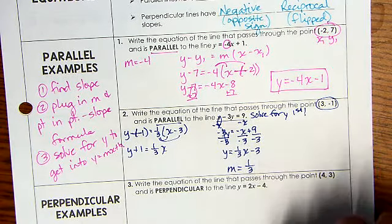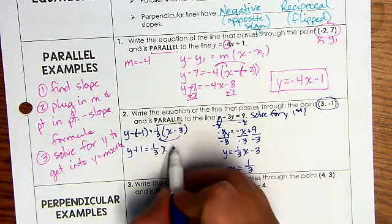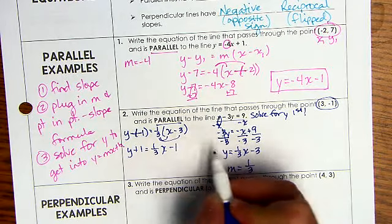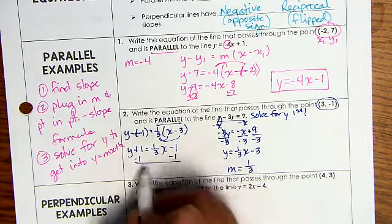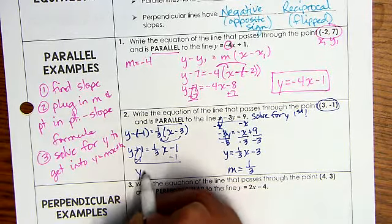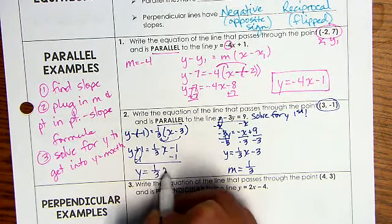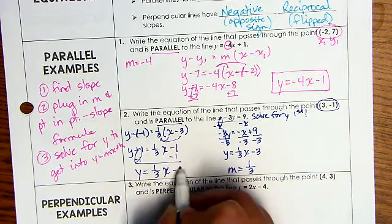So we have y plus 1 equals 1 third x. When I do 1 third times negative 3, there are negative reciprocals of one another. So this is going to be equal to negative 1 minus 1 from both sides.